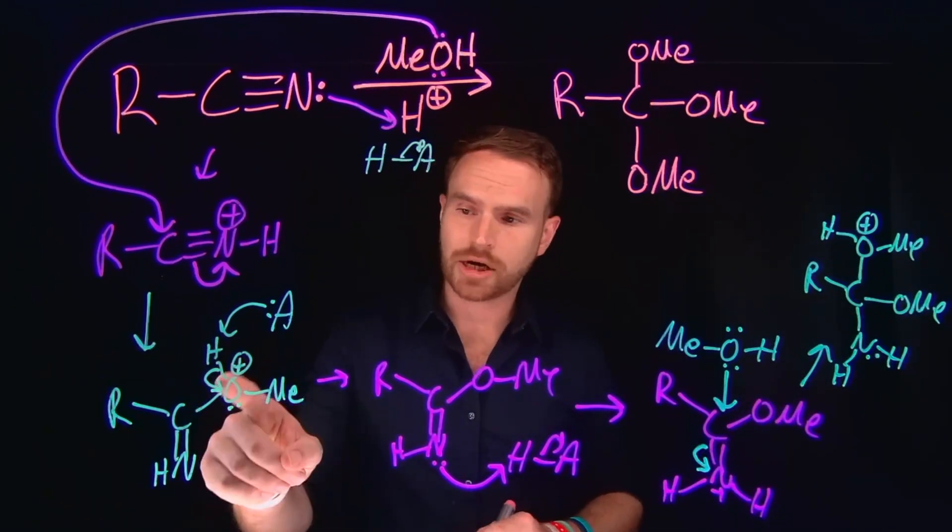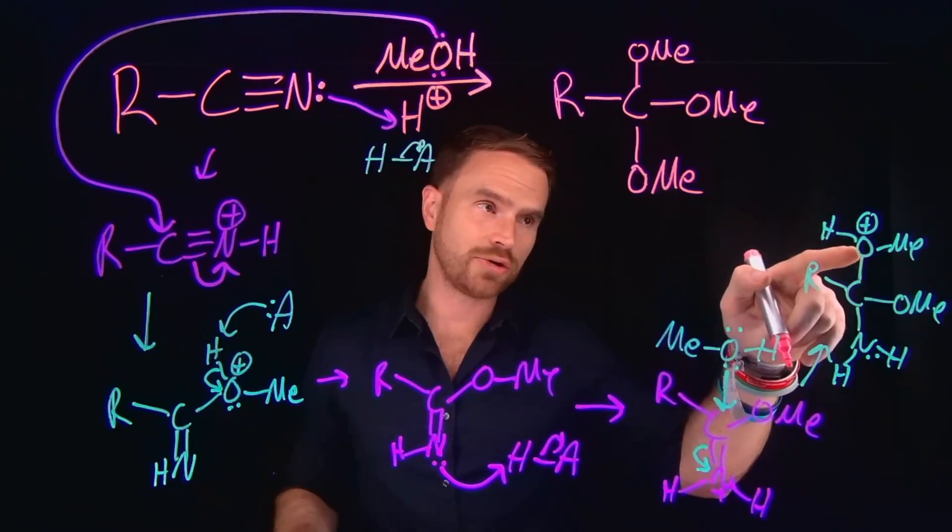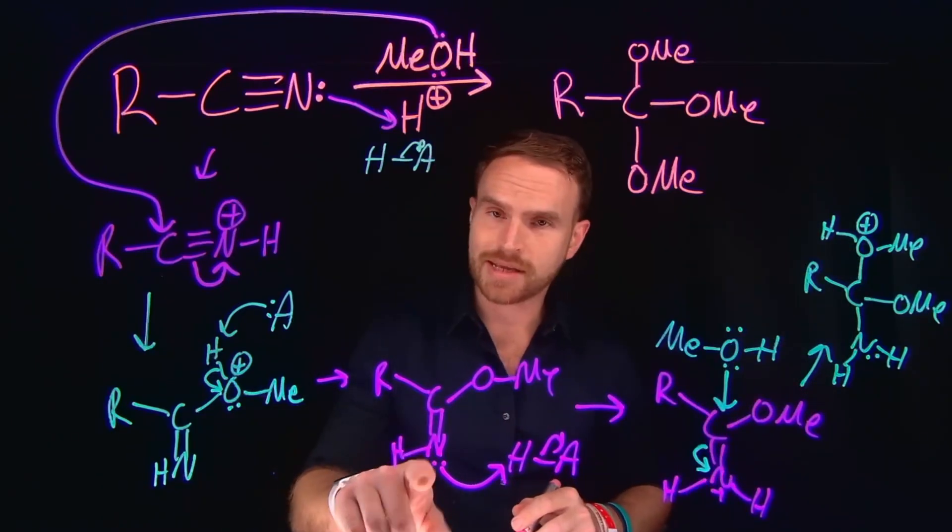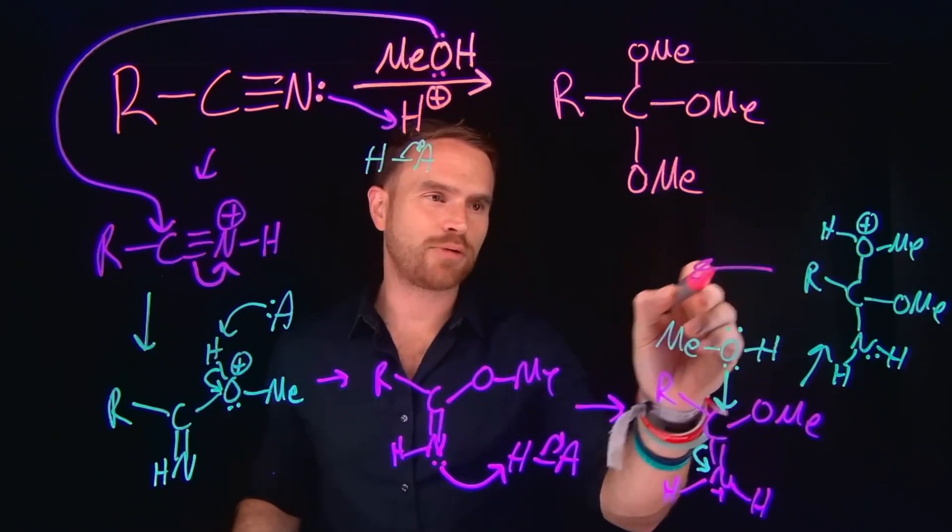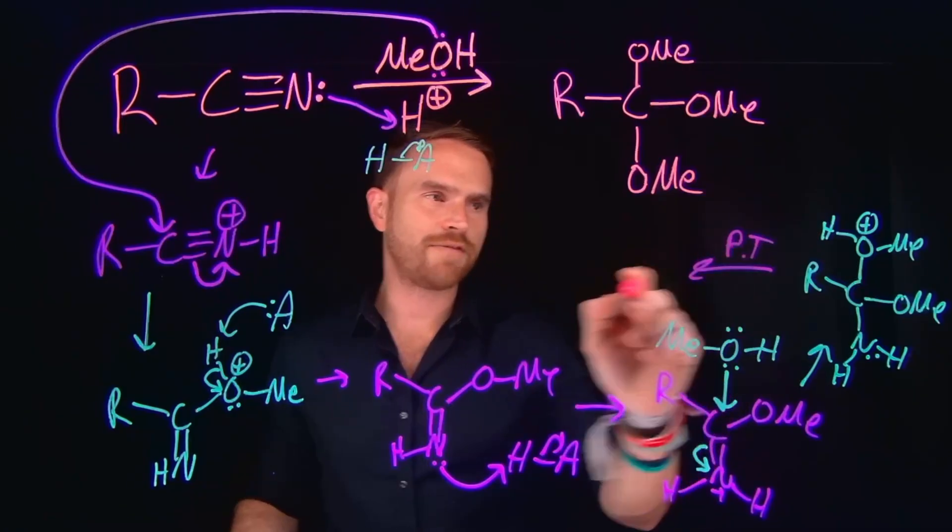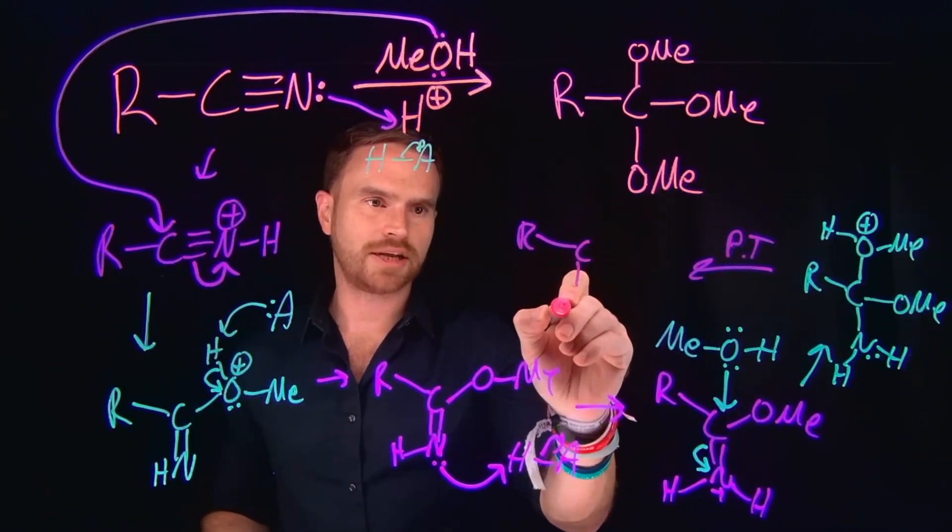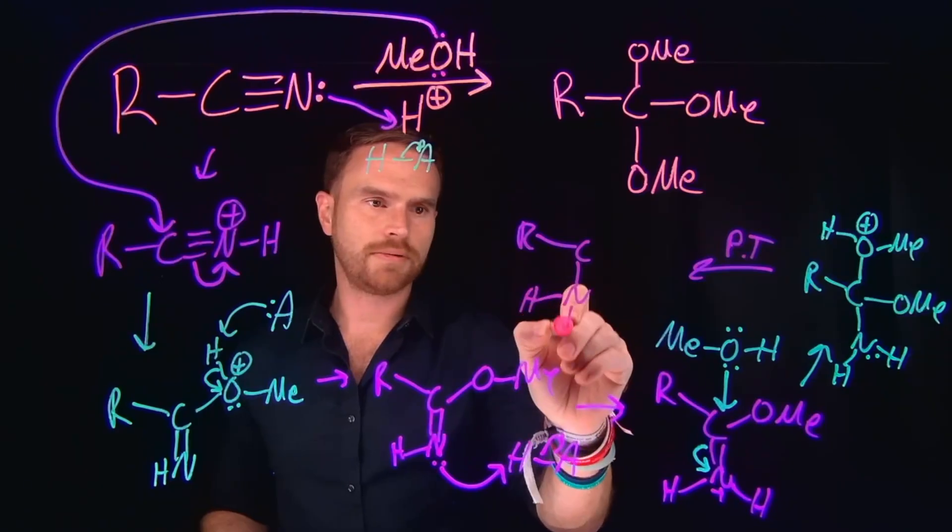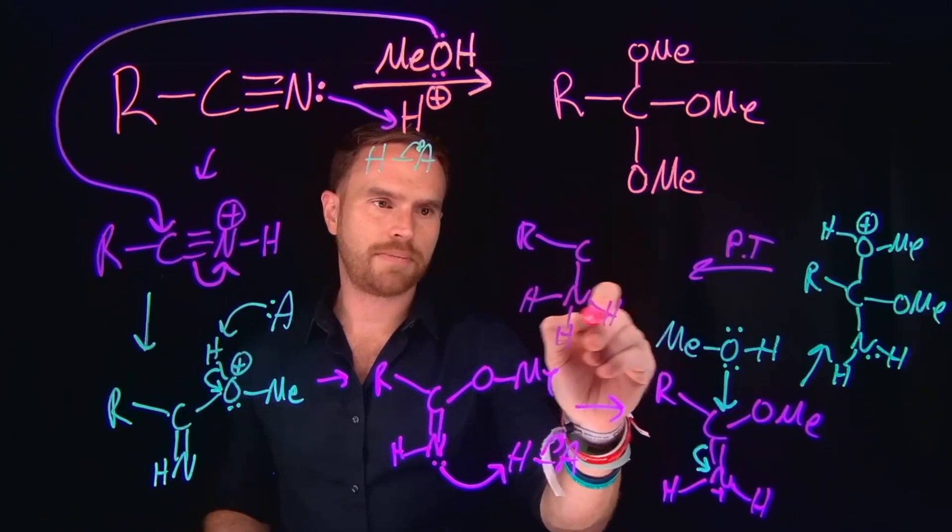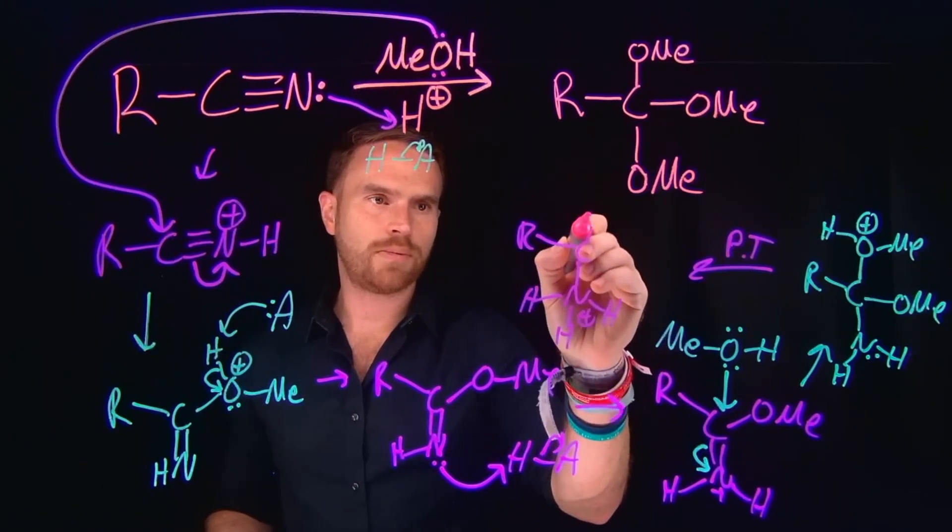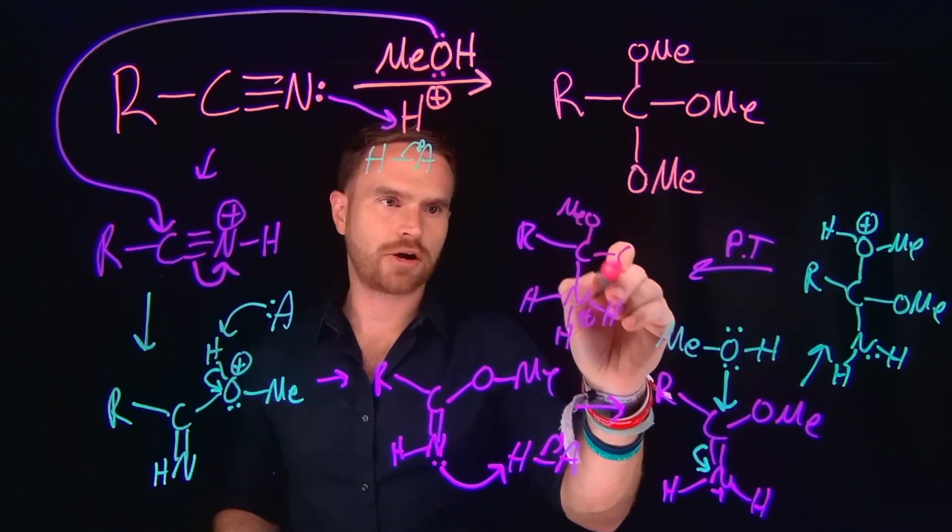So then again, just like we did a proton transfer to make this oxygen neutral, and then we reprotonated the nitrogen. If you follow that same proton transfer sequence, then eventually you'll end up with another positively charged nitrogen that is going to be attached to this carbon because now it will end up with three protons on it. And now we'll have these neutral methoxy groups attached to carbon.